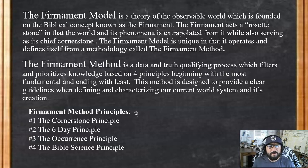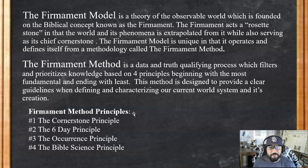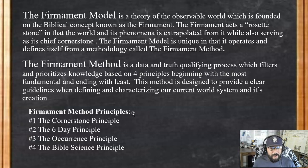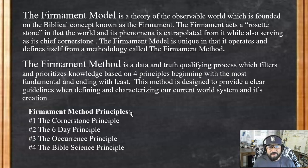The Firmament Model is unique in that it operates and defines itself from a methodology called the Firmament Method. The Firmament Method is a data and truth qualifying process which filters and prioritizes knowledge based on four principles. This method is designed to provide clear guidelines when defining and characterizing our current world system and its creation. To summarize, what we're trying to do is determine what the nature of our world looks like based on the Bible. Please keep in mind that this is not flat earth and it is not spinning ball earth. It is literally taking what the Bible says from a literal standpoint and illustrating what the world looks like if we apply what the Bible says.